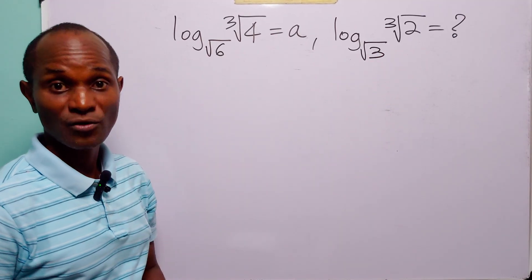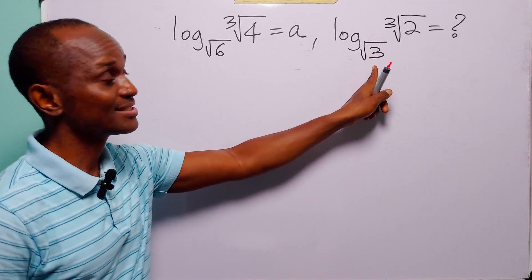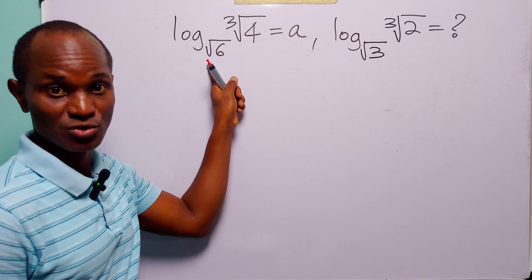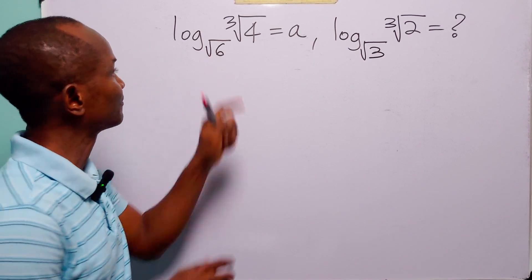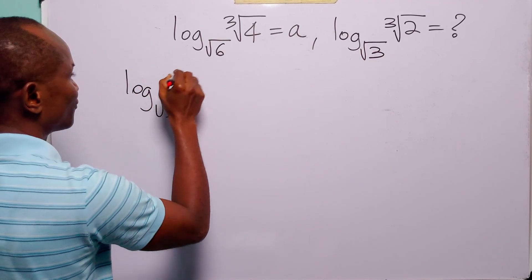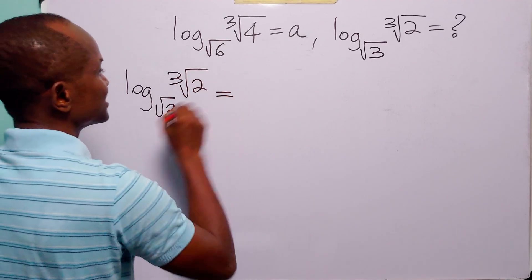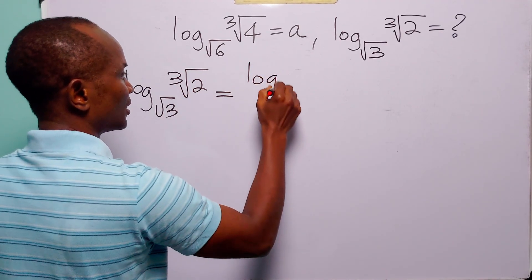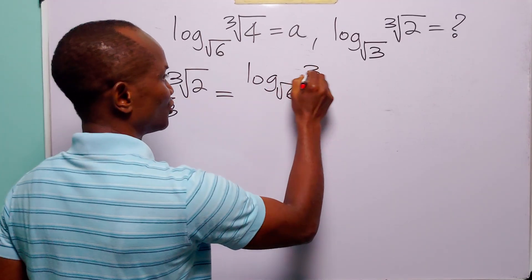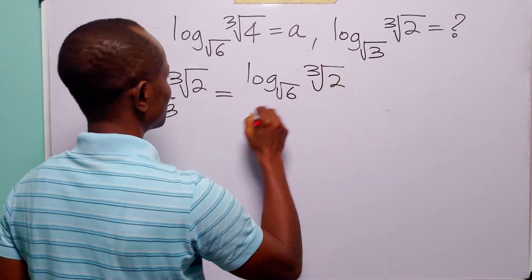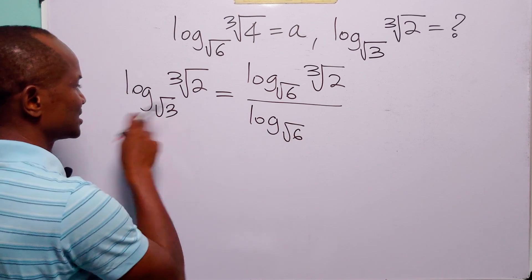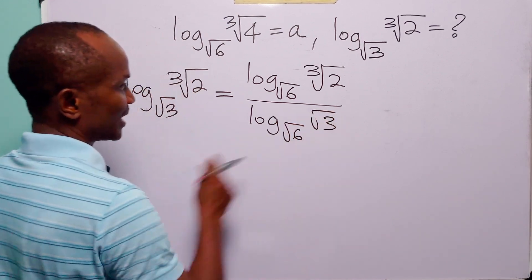To solve this problem, we are going to start by changing the base of this logarithm from base root 3 to base root 6. To do that, we will apply the change of base formula. So we have that log to base root 3 of the cube root of 2 is equal to log to base root 6 of the cube root of 2, divided by log to base root 6 of the old base, which is root 3.